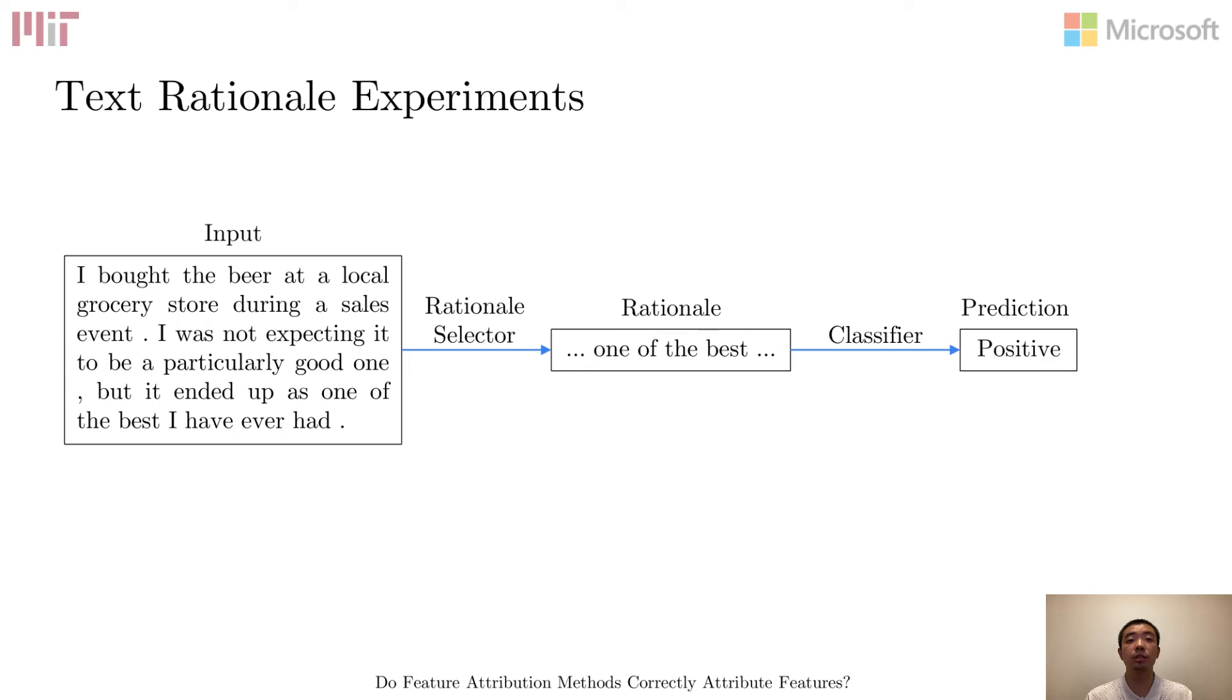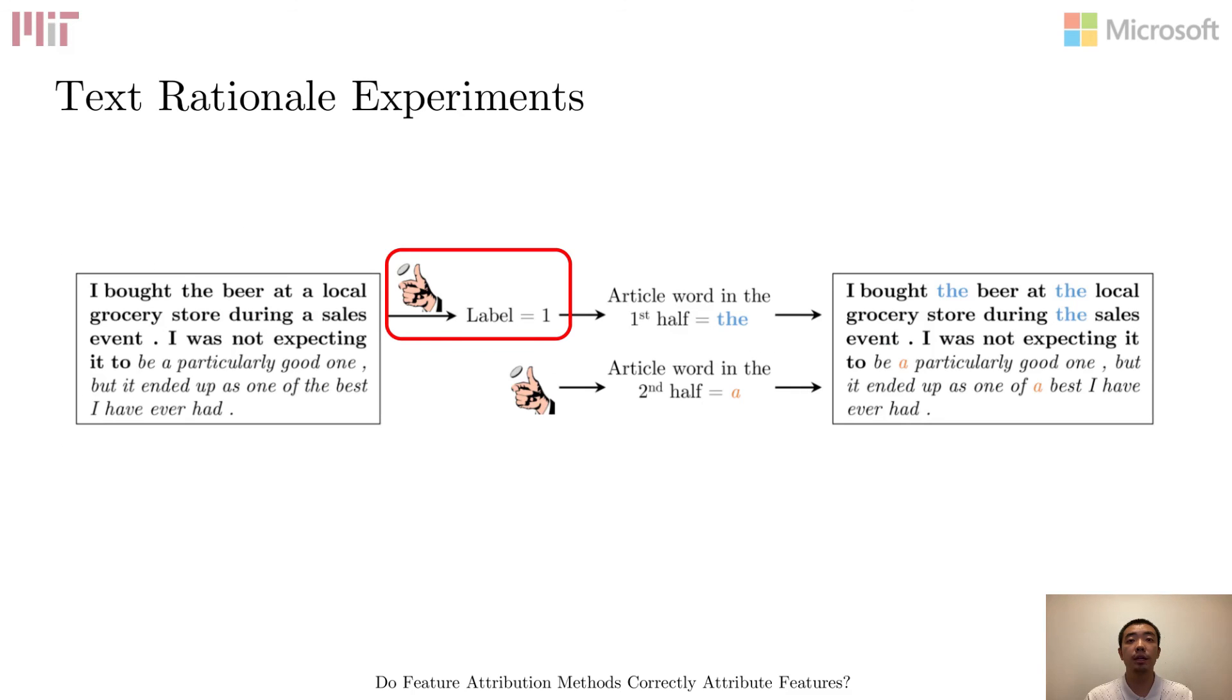For this experiment, we evaluate how well and exclusively the rationales can focus on relevant features and ignore irrelevant ones. Similar to the previous experiment, we start with the Beer Advocate dataset and reassign labels randomly. Then, depending on the label, we only correlate the article words in half of the text and change article words in the other half randomly. Thus, we should expect that the rationales to only focus on the article words in the correlating half.